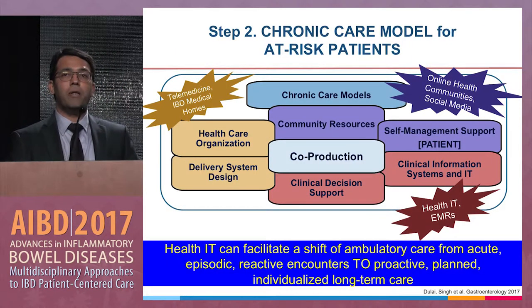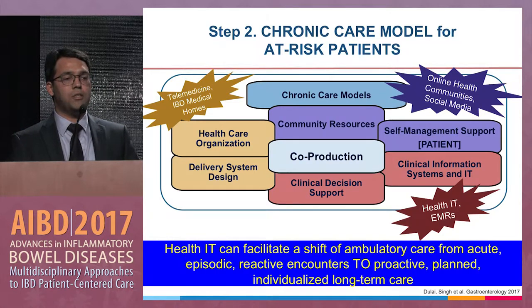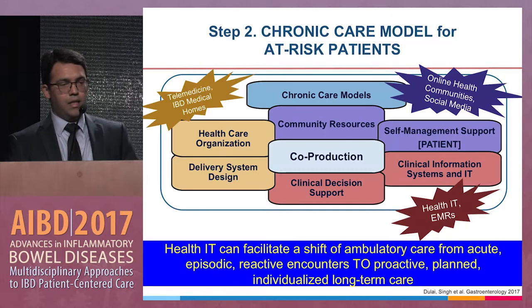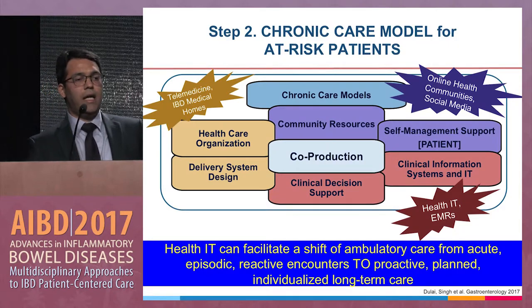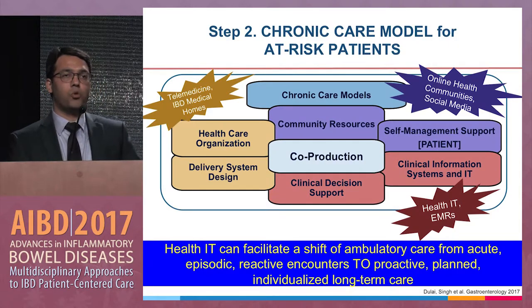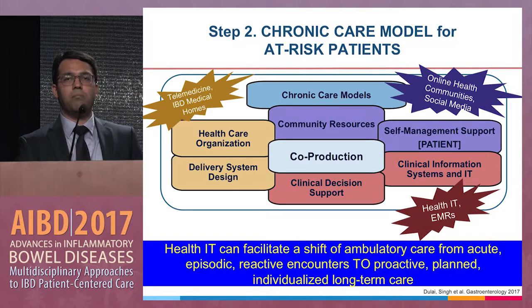The second step in population health management is the chronic care model for at-risk patients, which has six main components. The first two are community resources and patient self-management support. This is where social media and online health communities play a big part.